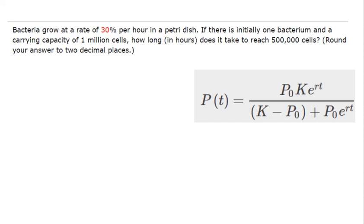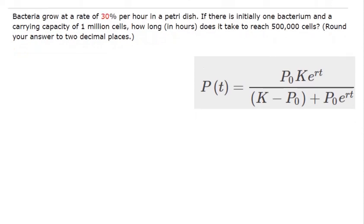Our textbook derived the solution to the logistic growth equation so we don't have to do all that calculus every time. We just really need to plug in the numbers where they're supposed to go. They're saying there's initially one bacterium, so P sub 0 equals 1.